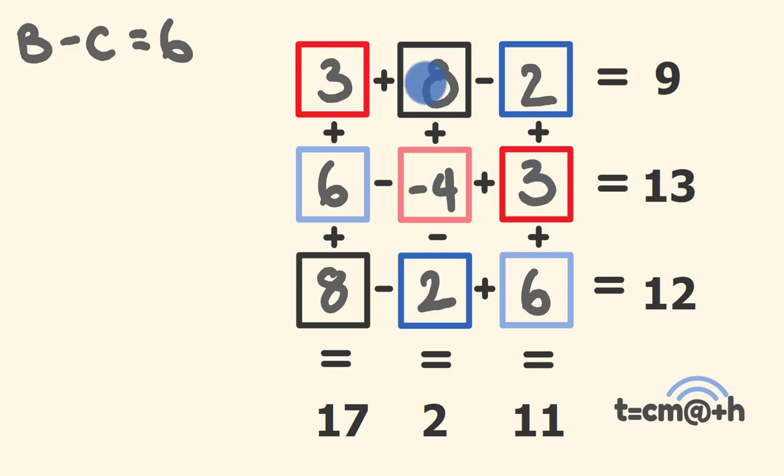And it should be right this way as well. 8 plus negative 4 is 4. Take away 2 is equal to 2. And there you have it. We have our answer.